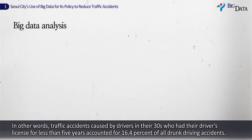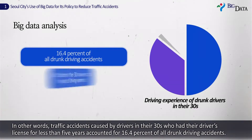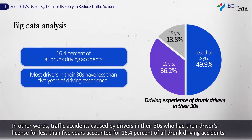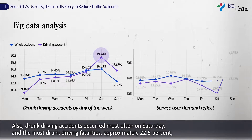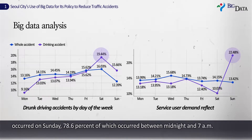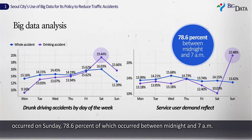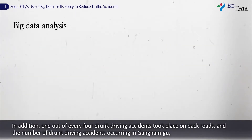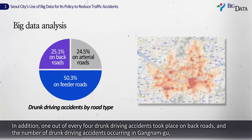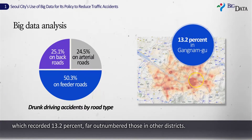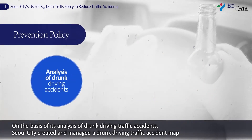Traffic accidents caused by drivers in their 30s who had held their driver's license for less than five years accounted for 16.4% of all drunk driving accidents. Drunk driving accidents occurred most often on Saturdays, and the most drunk driving fatalities — approximately 22.5% — occurred on Sundays, 78.6% of which occurred between midnight and 7 a.m. Additionally, one out of every four drunk driving accidents took place on back roads, and Gangnam-gu recorded the highest share at 13.2%. Based on this analysis, Seoul City created and managed a drunk driving accident map and designated sobriety checkpoints in partnership with the police.